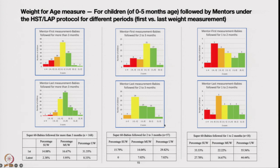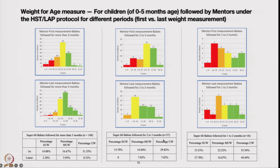These are the same super 60 mentors. If they adopted babies for just two to three months and did not continue monitoring, the low birth weight rate came down from 30% to 7% — a remarkable reduction. HCW and MUW also reduced. For babies monitored for more than three months, the rate came down from 14.8% to 2.3%.